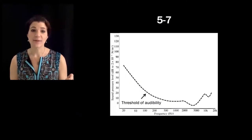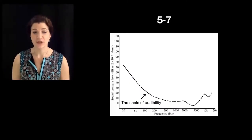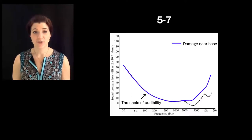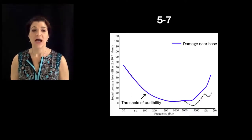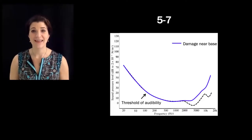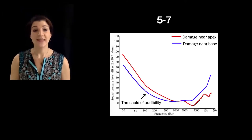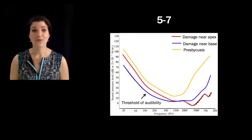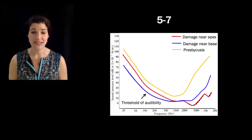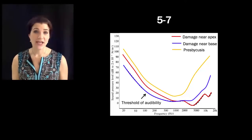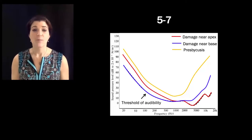The threshold of audibility is the quietest sound you can detect at each frequency. Damage that reduces sensitivity near the base would cause increased thresholds for high-frequency sounds — meaning the sound has to be louder for you to perceive it. Reduced sensitivity near the apex would increase thresholds for low-frequency sounds. Presbycusis increases thresholds for everything, but particularly for high-frequency sounds. As we age, not only does it get harder to hear all frequencies, but it gets more difficult particularly to hear those really high-frequency sounds.